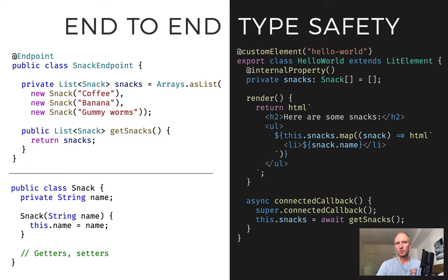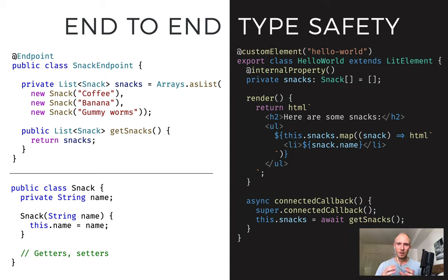We offer end-to-end type safety, meaning that you can take your Java data model and expose it through endpoints in a type-safe manner. Essentially, what we do is create a REST endpoint and TypeScript wrappers around that, and generate the corresponding TypeScript types. So when you're building your client-side view, you're able to have the same data model, same validation, same everything in your client-side app as you have on your back-end — meaning that if something changes on the back-end, you'll catch those errors immediately on the front-end.